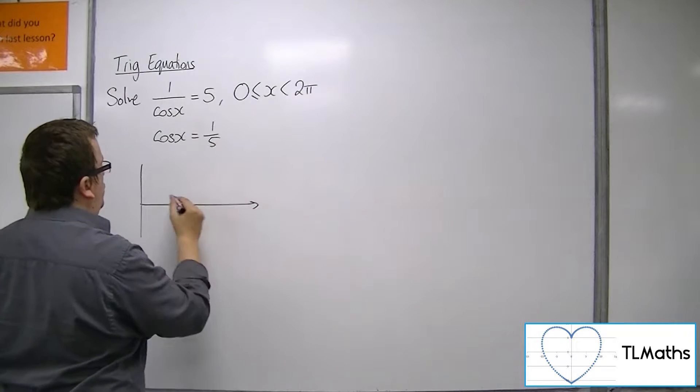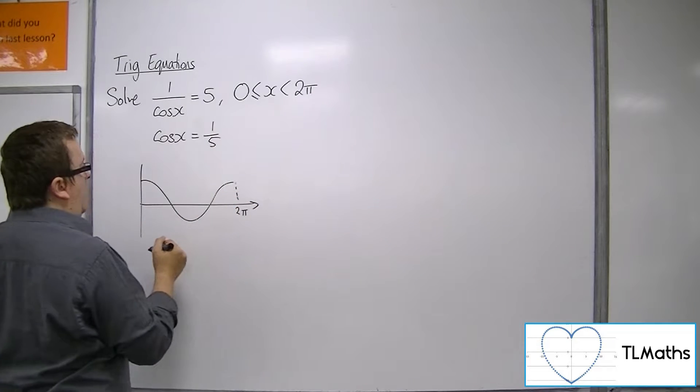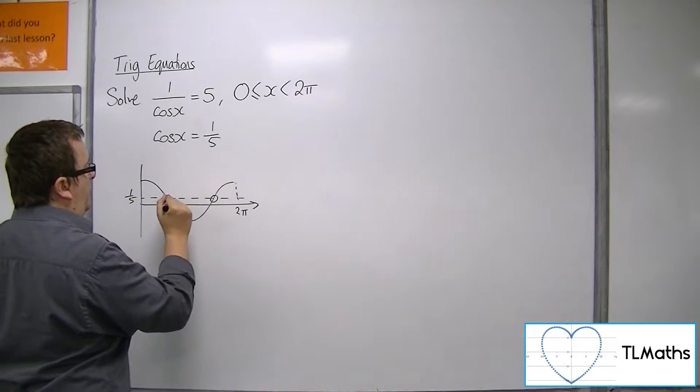A quick sketch of cosine between 0 and 2 pi, 1 fifth. I'm looking for two solutions.